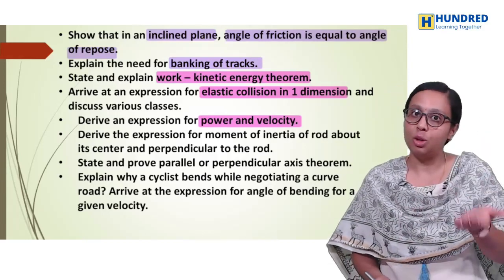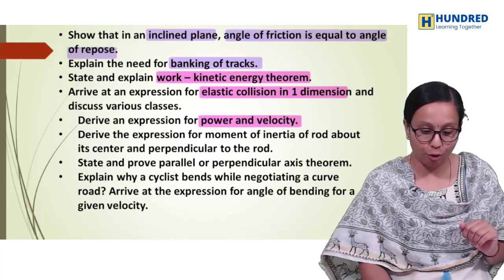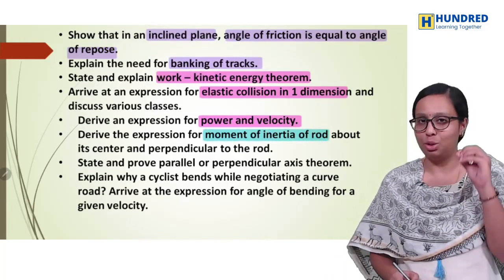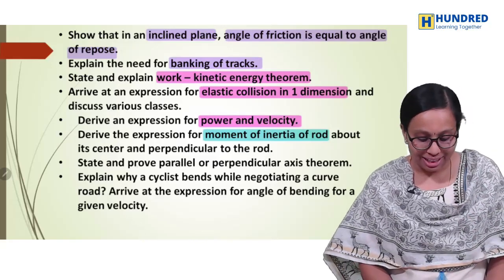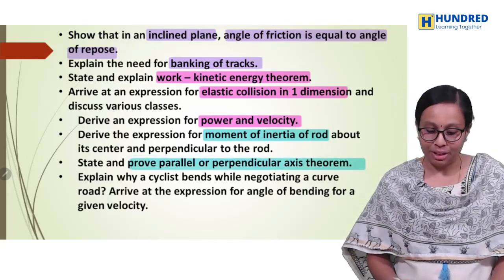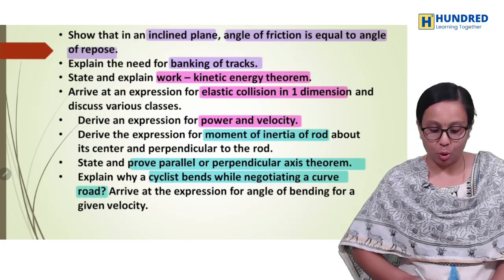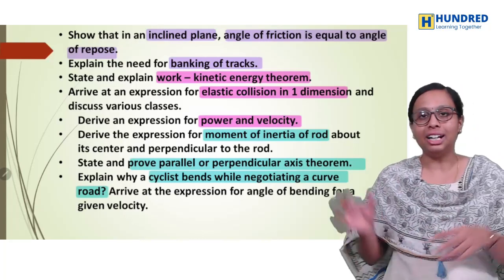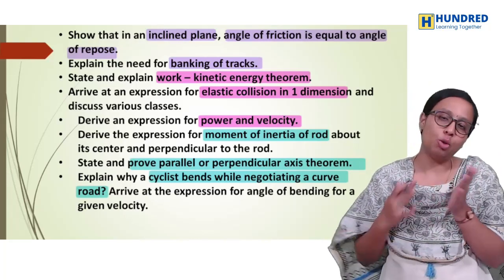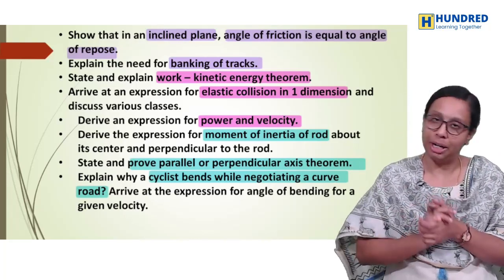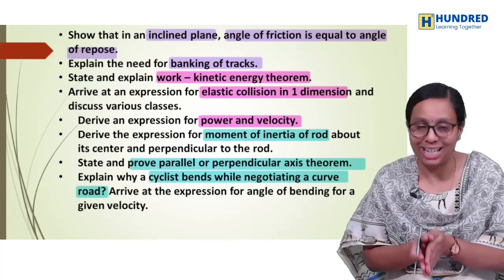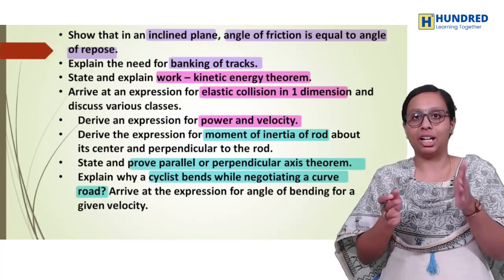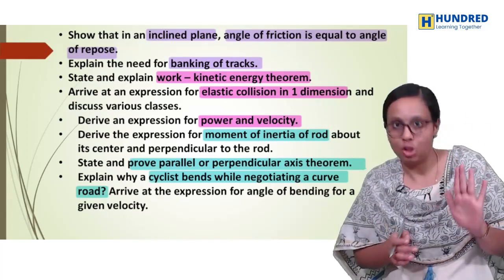In the fourth chapter, we have to cover those questions. The fifth chapter covers the moment of inertia of a rod — a very important question — parallel axis and perpendicular axis theorem, and cyclists tending to bend at a curve with its expression. When we cover this, we have to ask the first volume maximum 3 to 5 marks. These are the highest weightage questions of the first volume.